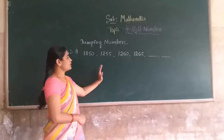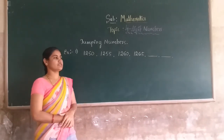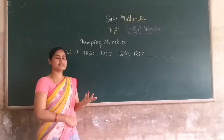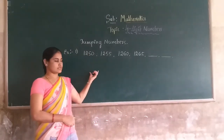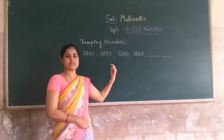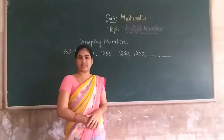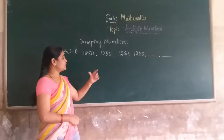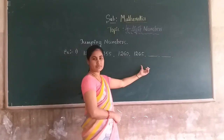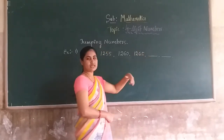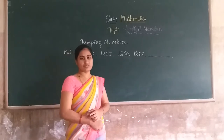First, find out what is the common difference between these two numbers. You need to understand how many steps you can jump — that is the common difference between two numbers. Once you find the common difference, you can identify how many steps you can jump in the forward direction, and then add the common difference to the last number to get the next number in the series.